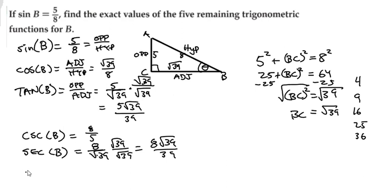And then your cotangent. Cotangent of b is going to be the reciprocal. I always want to call it opposite, but it's not the opposite, it's the reciprocal. So it's the adjacent over the opposite. Adjacent over the opposite, which is square root of 39 divided by 5.